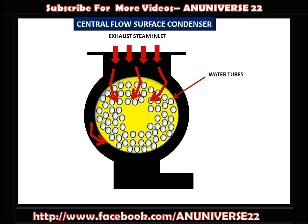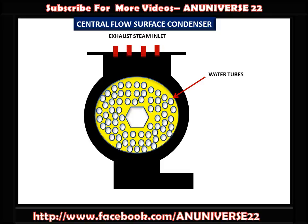This causes the steam to flow radially inwards over the tubes. As we can see with the animation, the exhaust steam is moving radially inward over the tubes towards the suction pipe.